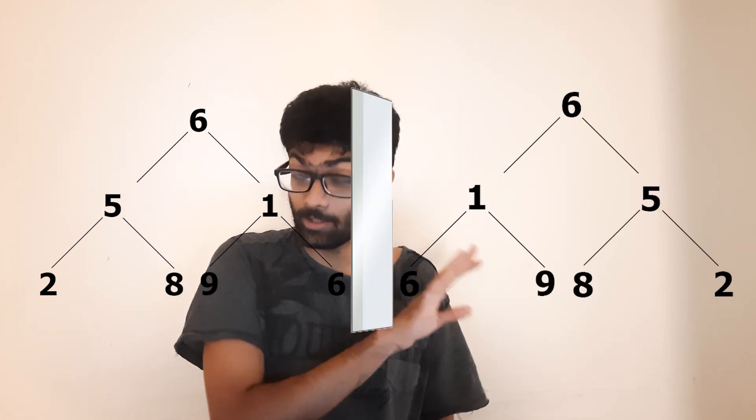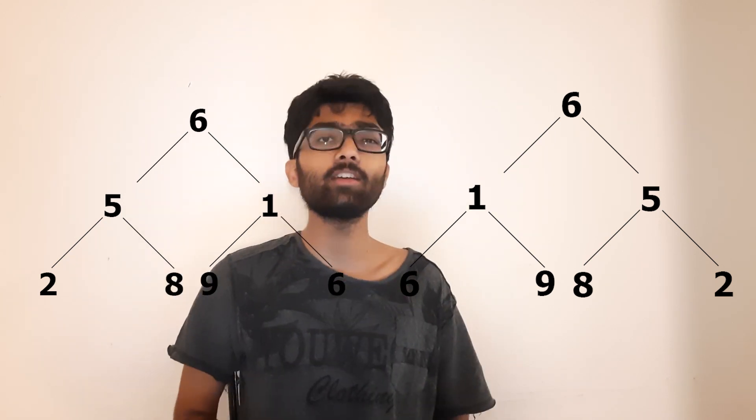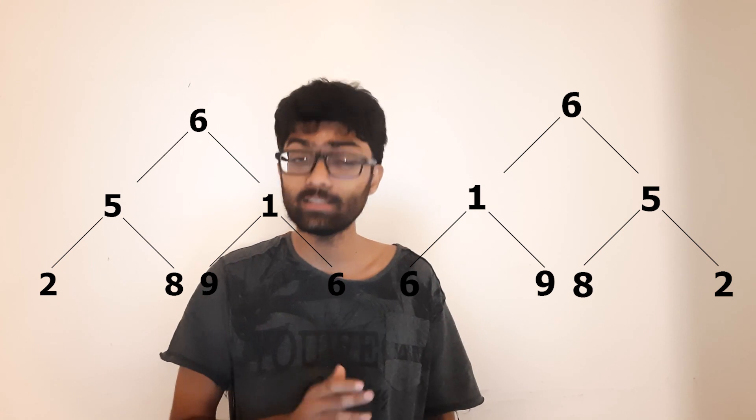So imagine you've got a tree, you can see it here, and you put a mirror on one side. Now the new tree will look like this, and once you straighten out the numbers, this is what the inverted tree will look like, and that's your goal, to return this inverted tree.